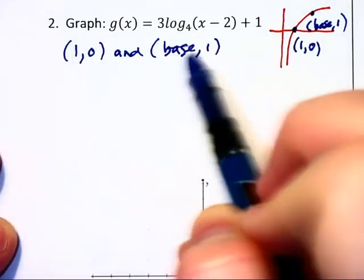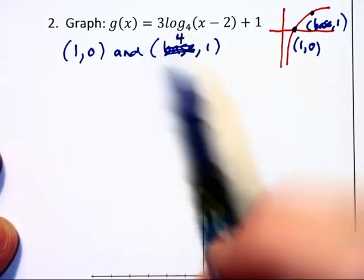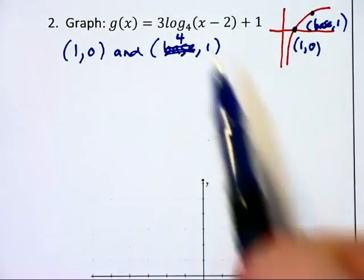For us, the base is 4, so that becomes (4,1). Now let's look at the different transformations we have.